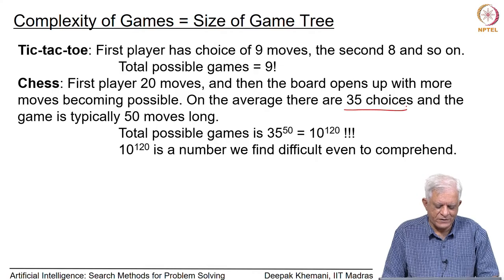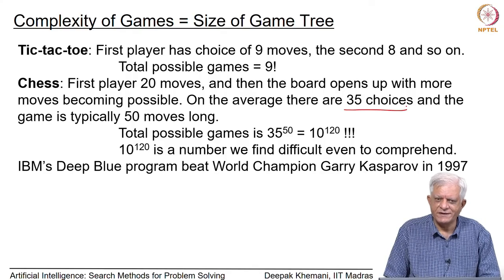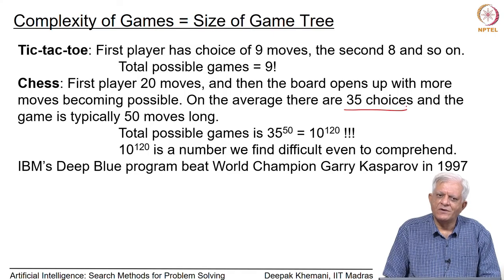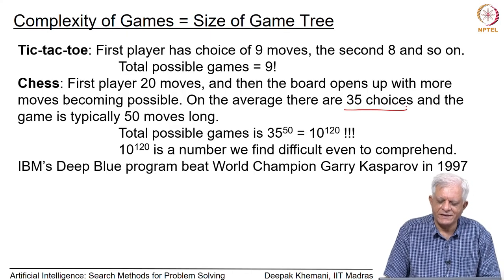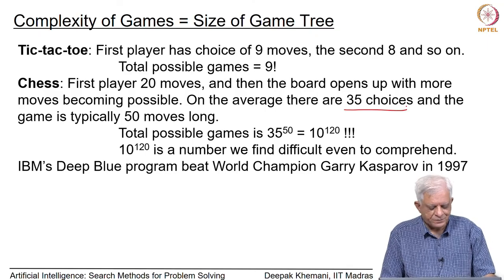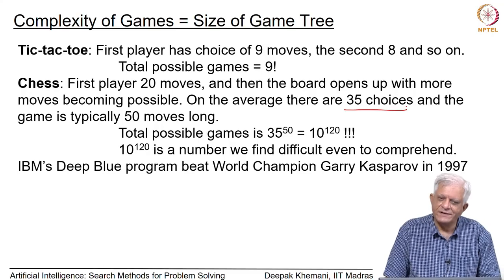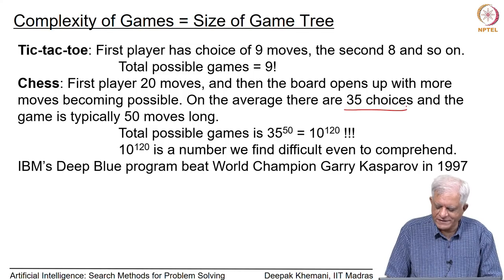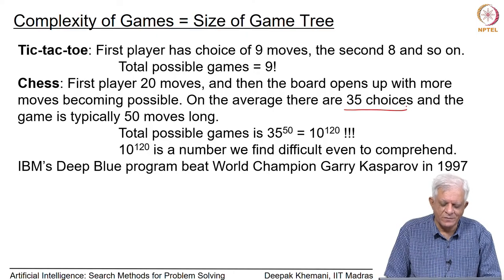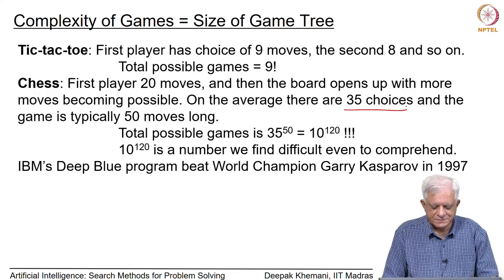Clearly we cannot analyze the full chess tree and therefore we do not know the value of the chess game — we do not know whether white always wins, whether the game is always a draw, or whether black always wins. That is why chess is still fascinating to us, unlike tic-tac-toe which we know will always be a draw. Chess has not been solved, but we have programs good enough to beat the best humans, starting with IBM's Deep Blue beating world champion Garry Kasparov in 1997.